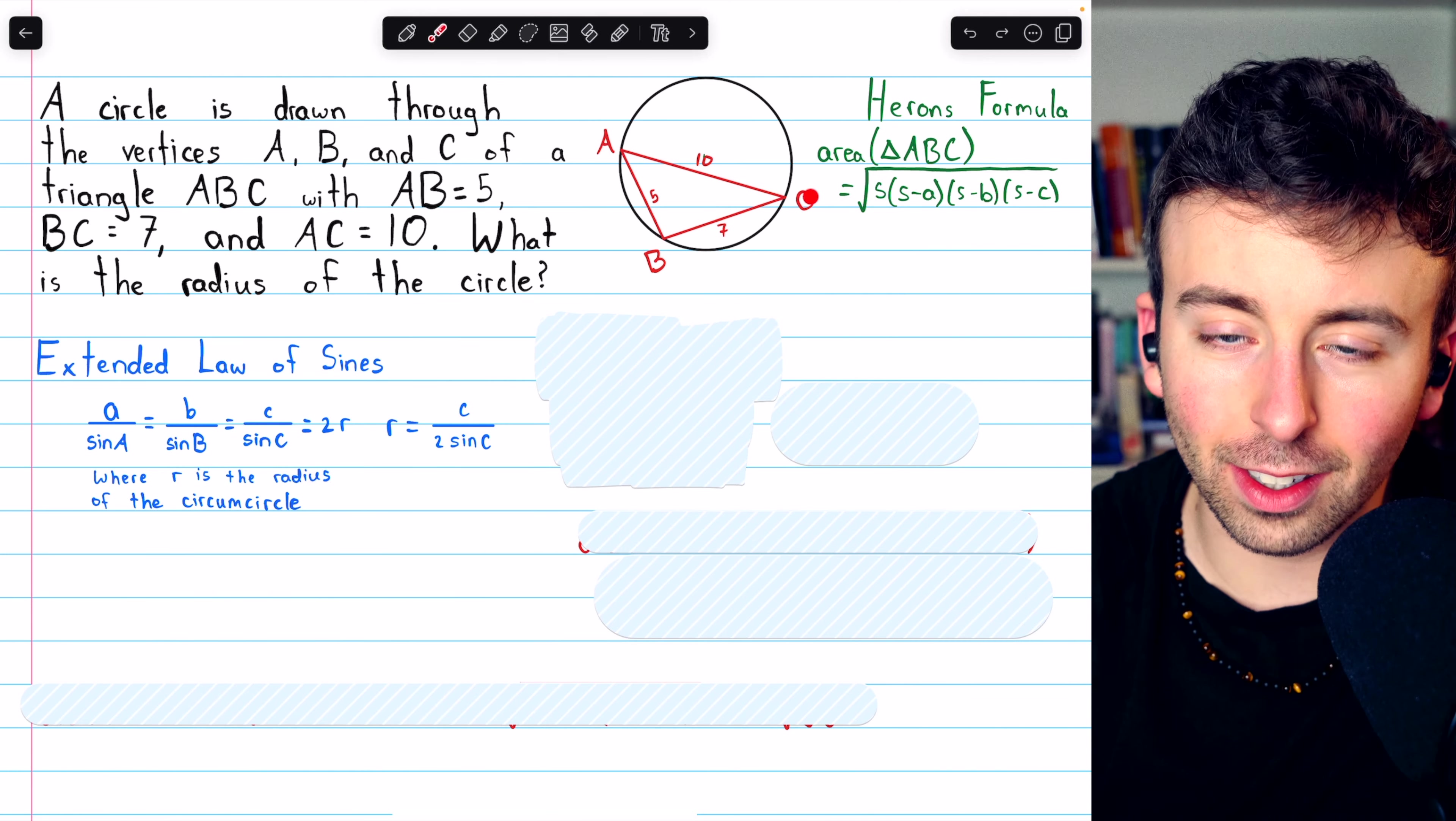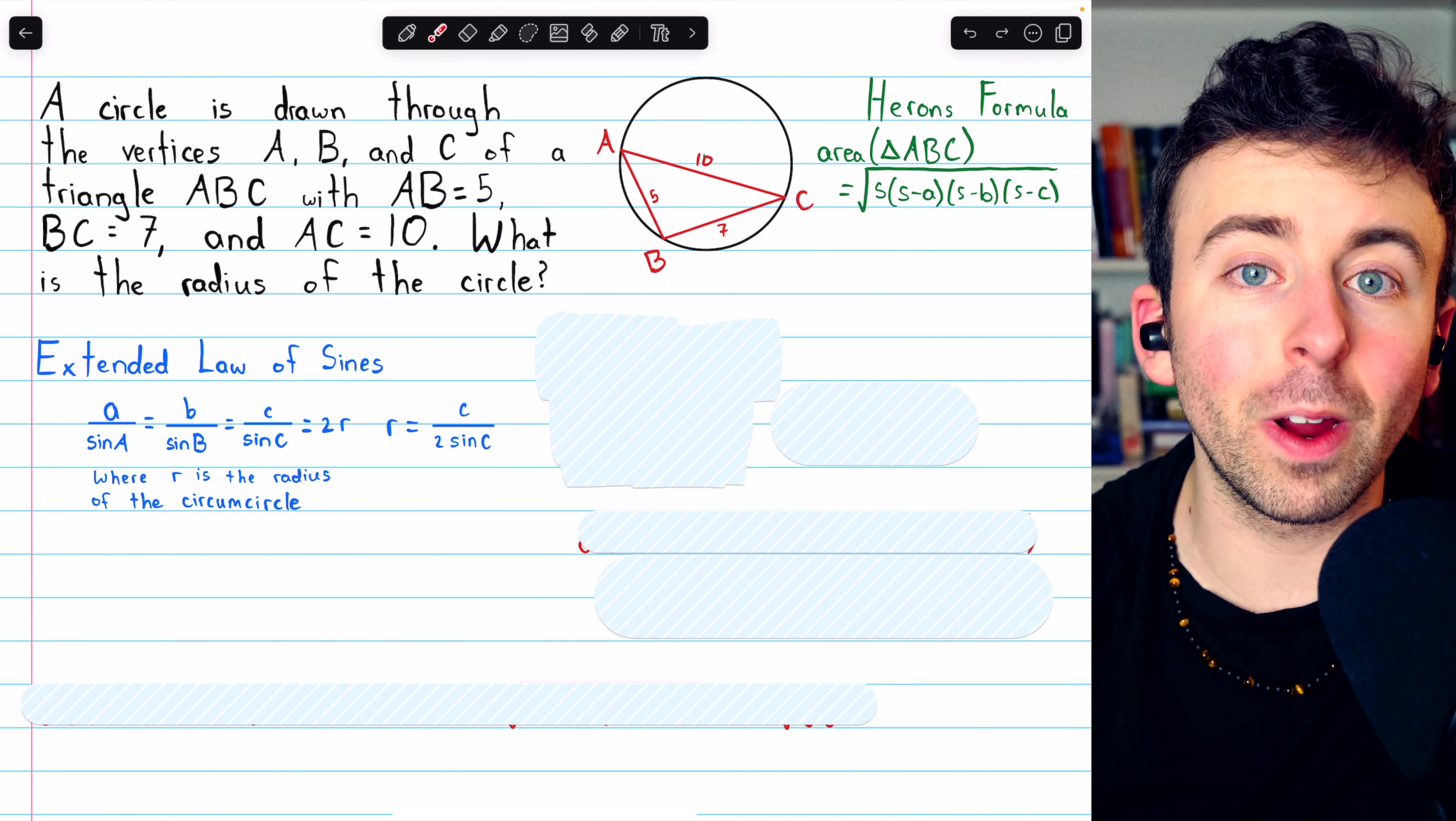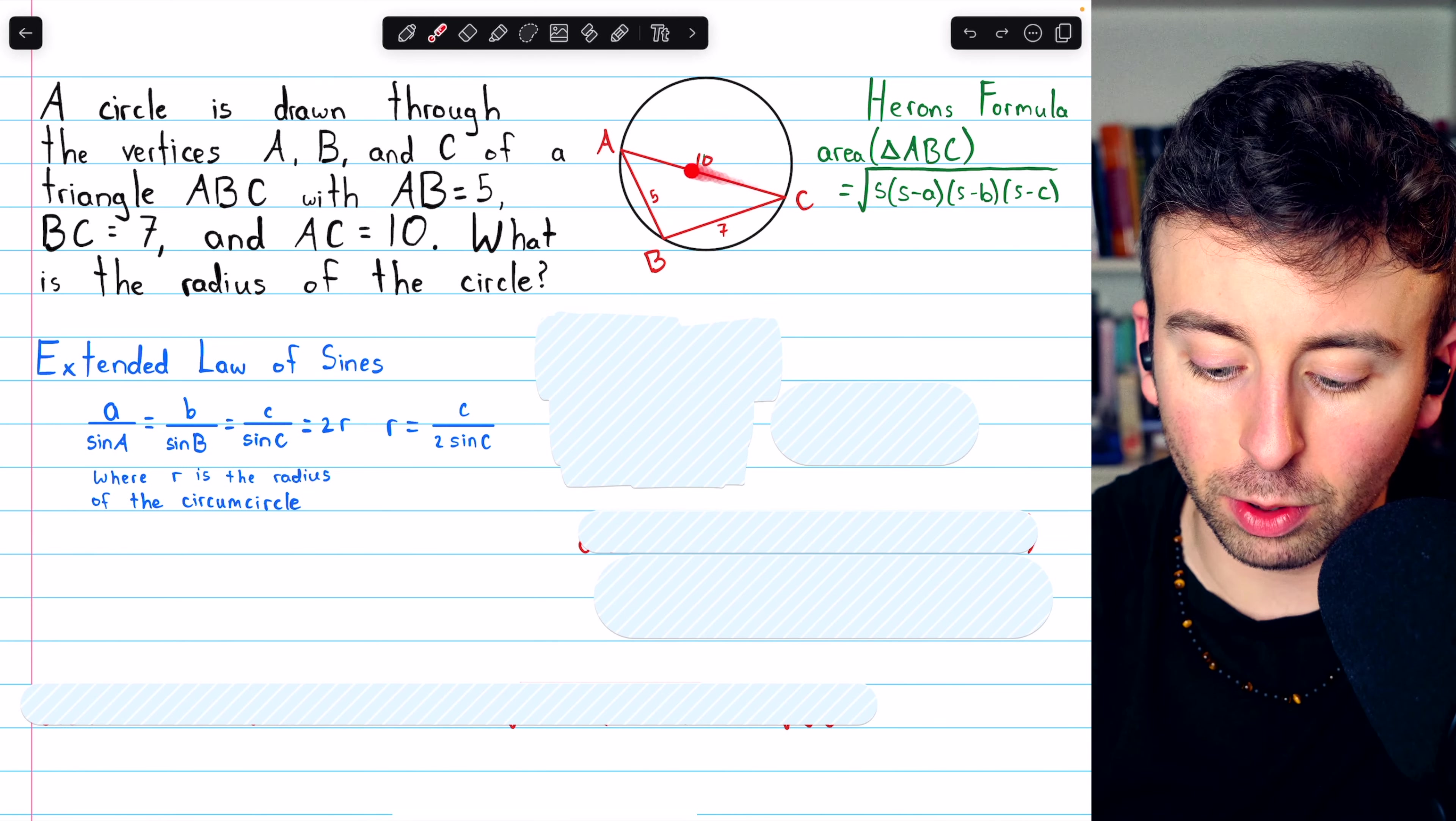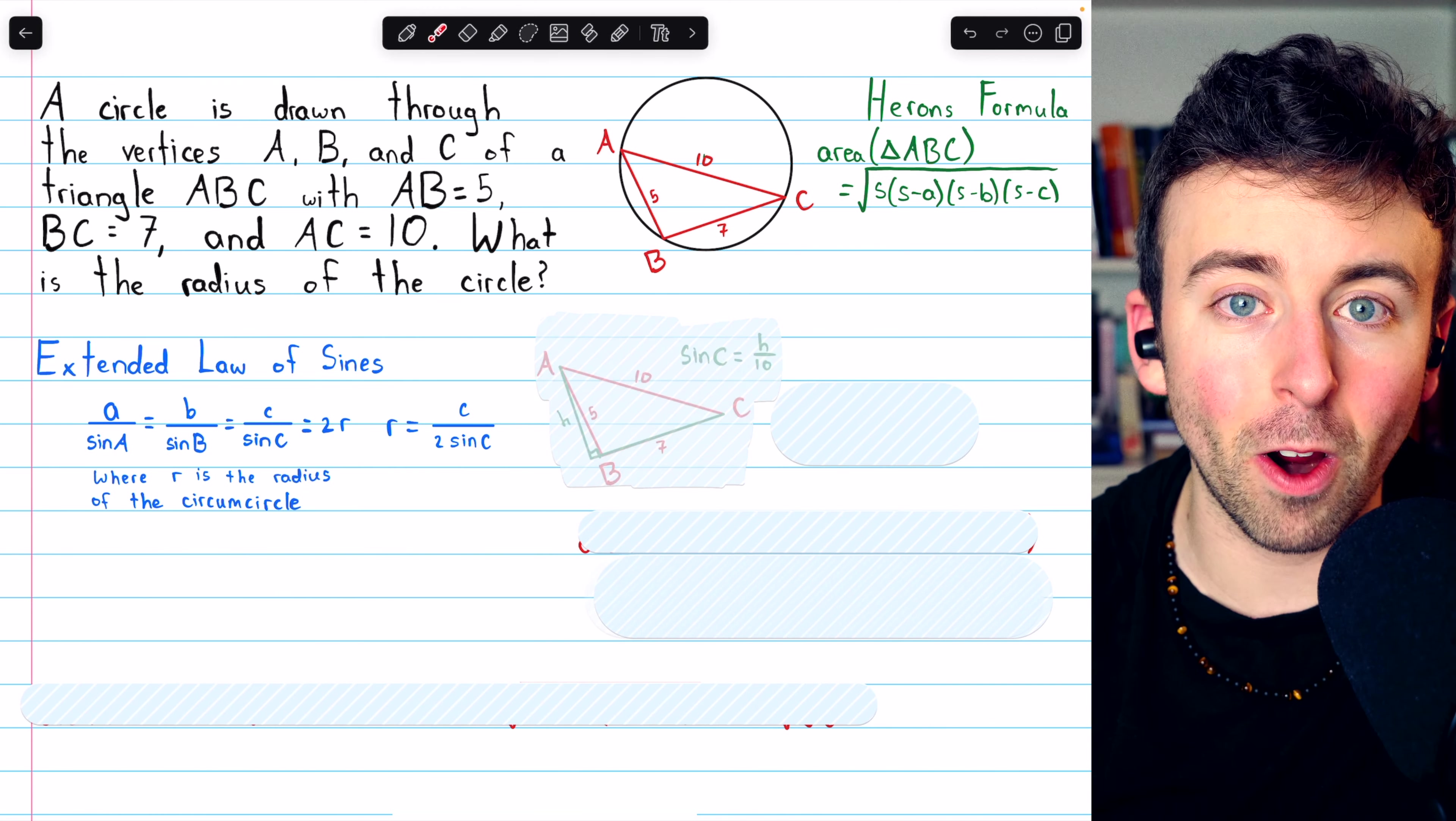Now, sine of this angle is actually going to tell us about the height of this triangle. So we can use that to create an expression for the area. And then we can find what the area actually is using Heron's formula, and in that way we'll be able to solve for sine C.